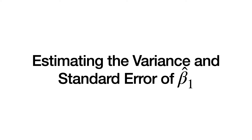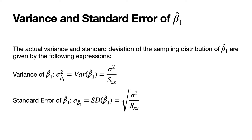Now let's estimate the variance and standard error of beta 1 hat. The actual variance and standard deviation of the sampling distribution of beta 1 hat are given by the following expressions derived in a previous lecture video. The variance of beta 1 hat is equal to sigma squared over S sub xx, where sigma squared is the variance of the model error terms and S sub xx is the corrected sum of squares of the x values. The standard error of beta 1 hat is the square root of sigma squared over S sub xx. Because these involve sigma squared, if sigma squared is unknown we can't calculate either of these quantities.